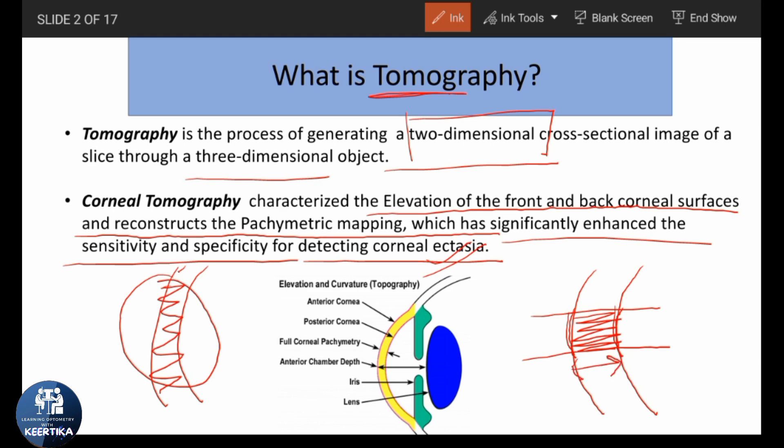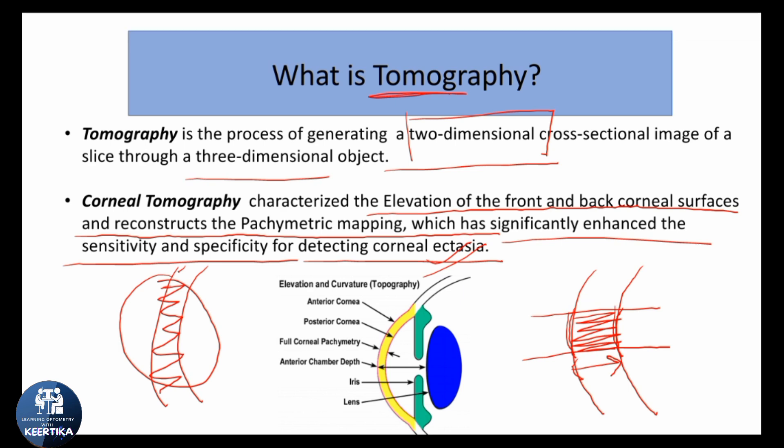In corneal tomography, along with topography, we can also find out the pachymetry. Pachymetry means the thickness of the cornea.